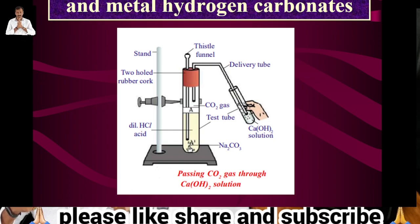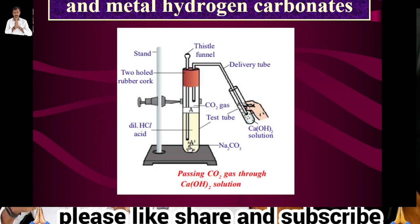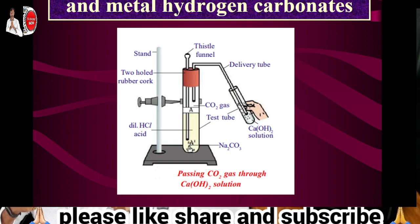Sodium carbonate is the chemical substance used. Required materials: one test tube fixed to a stand, two-hole rubber cork, one funnel, one delivery tube, one test tube with lime water. The process: fix the test tube to a stand and add some sodium carbonate. Also required is one acid — diluted hydrochloric acid.